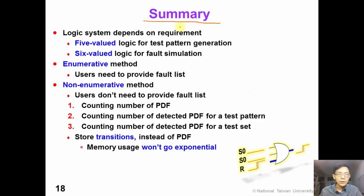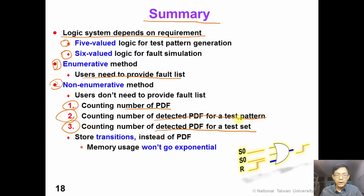So let's conclude this video. We have shown many different logic systems, and the choice of logic system depends on our requirement. For example, in robust test pattern generation we use five-value logic, but in this video we use six-value logic. We presented two force simulation techniques. The enumerative method is simple, but the user needs to provide a fault list. The non-enumerative method does not require a fault list. It has three steps: in the first step we count the number of PDFs; in the second step we count the number of detected PDFs for a single test pattern; and then we count the number of detected PDFs for a whole test set. In this technique, we store the transitions instead of the path-delay faults so that our memory usage won't go exponential.